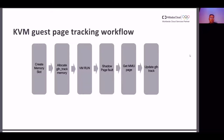This is the normal workflow of the GFN tracker. First, create memory slot. Second, allocate GFN tracker memory. When the VM is running, a shadow page fault occurs, and the GFN tracker bitmap would be updated. Our optimization is to not allocate GFN tracker memory upfront.